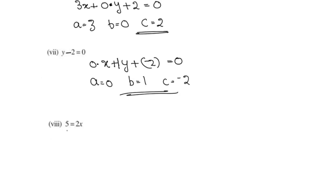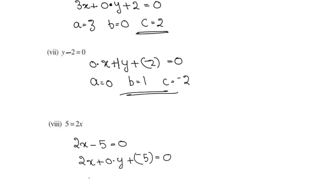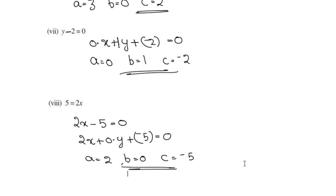Next question: 5 equals 2x. Rearranging, 2x minus 5 equals 0. So a is equal to 2, b is equal to 0, and c is equal to negative 5. That completes the full exercise. See you in the next video.